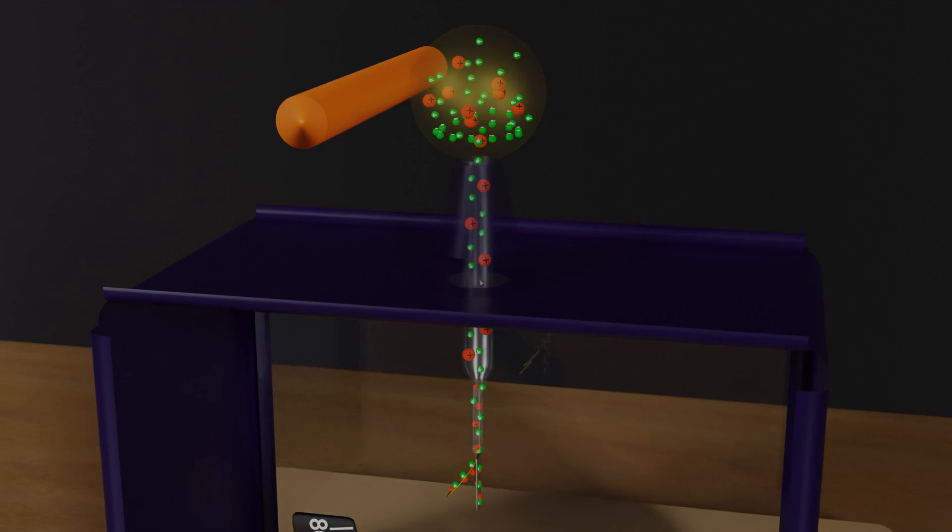As a result, the gold leaf returns back, and the degree of deflection shows the strength of the charge on the object.